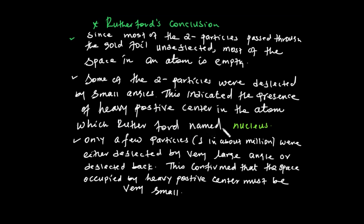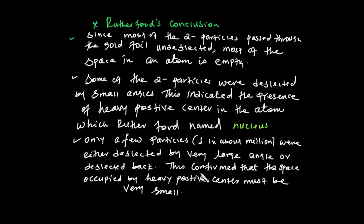This positive center is the nucleus, discovered by Rutherford. Only a few particles — about one in a million — were deflected by very large angles or bounced back, indicating that the space occupied by the heavy positive center is very small. That means the nucleus must occupy a very small region located at the center of the atom.